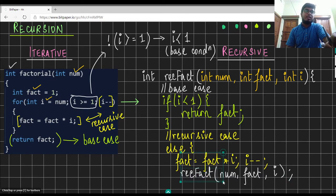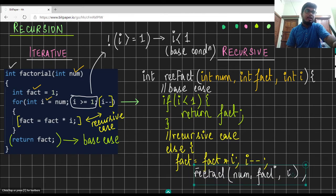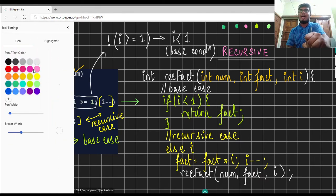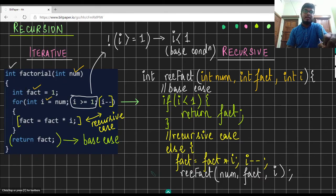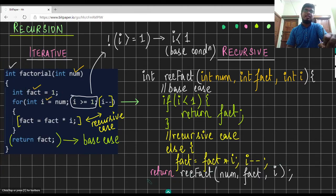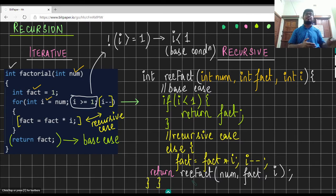Moreover, because this function returns a value, you just need to add the keyword return in front of the recursive call. Then you close the else block and the function. And there you go — we have our recursive function.